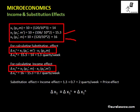Therefore, the total change in demand for good one equals the change due to substitution effect plus the change due to income effect: 1.3 plus 0.7 equals 2. So the total change due to the price effect is 2, the change due to the substitution effect is 1.3, and the change due to the income effect is 0.7.